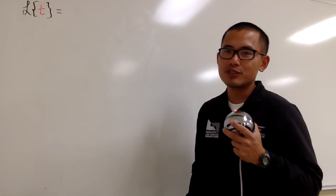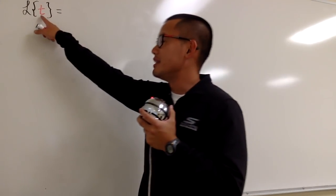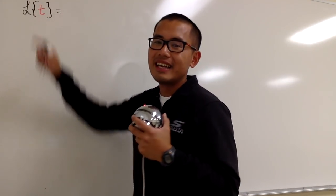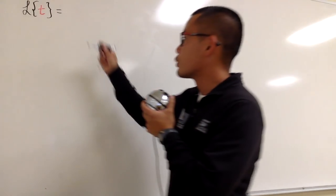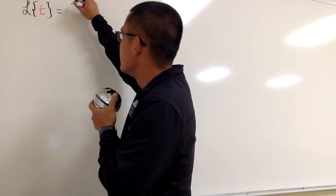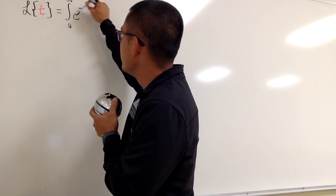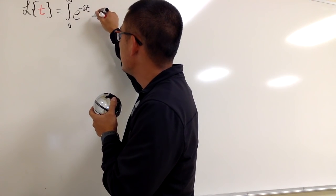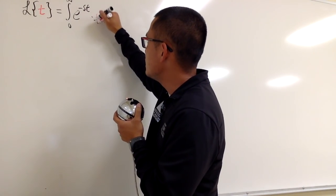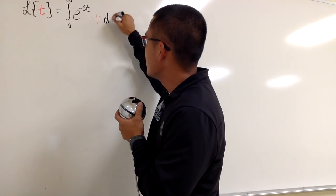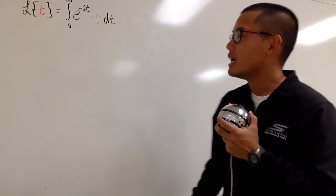I'm going to figure out the Laplace transformation of the function t. We'll be using the definition again. This is going to be the integral from 0 to infinity of e to the negative st times t. And don't forget, it's always dt in the Laplace transformation.